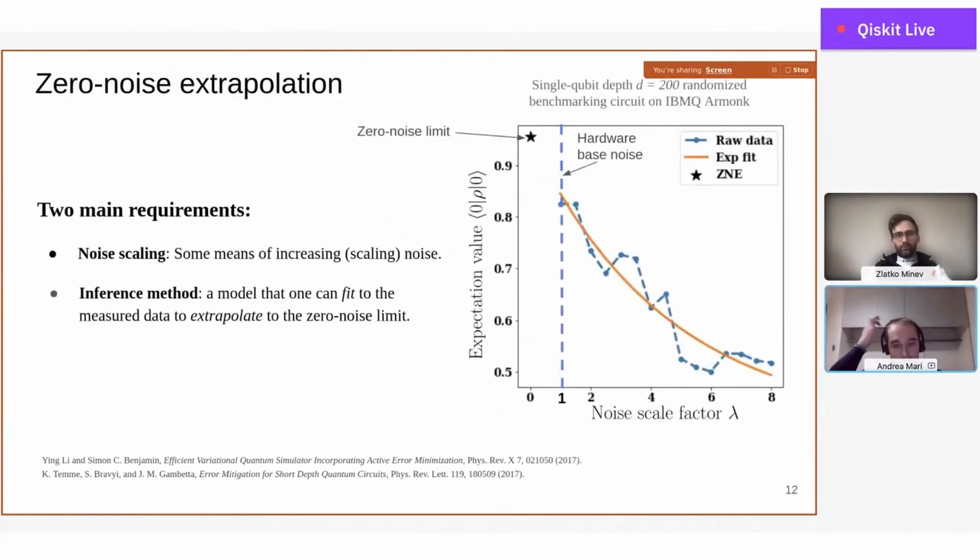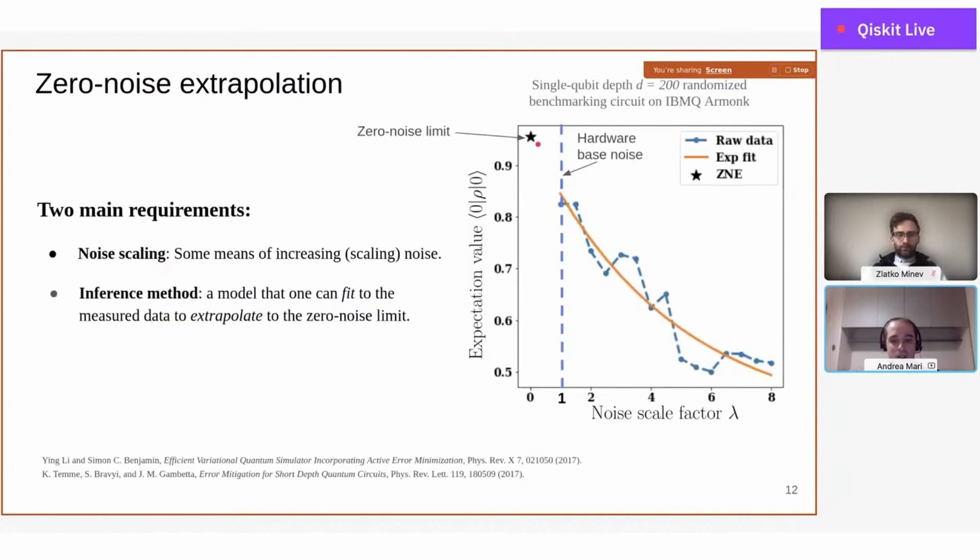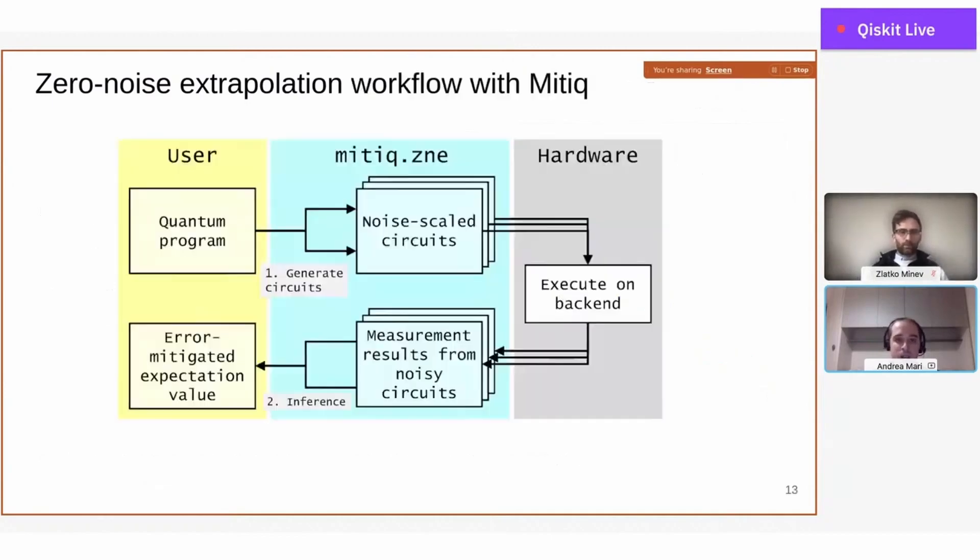As you can understand from this plot, there are two main requirements to do this. You first need to scale the noise in some way, because it's not trivial to increase the noise of a computation. And you also need to decide which kind of model you want to fit to your data. Basically, these two steps correspond exactly to the two main steps in the general workflow of Mitiq.